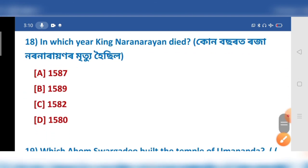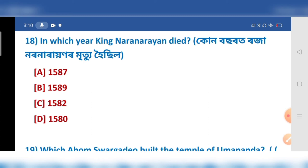In which year did King Naranana die? Your option number 12 — 1587, and 1571.